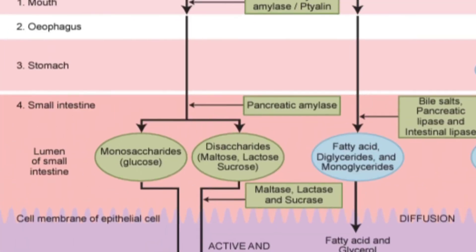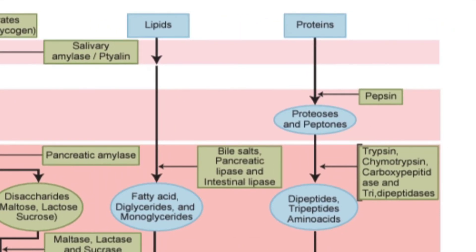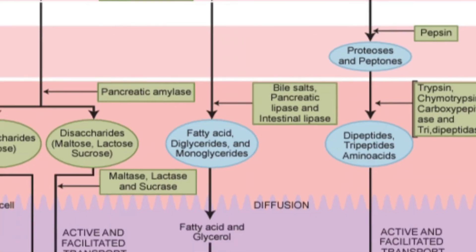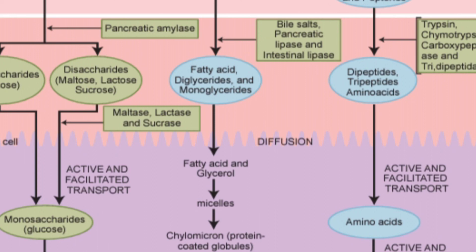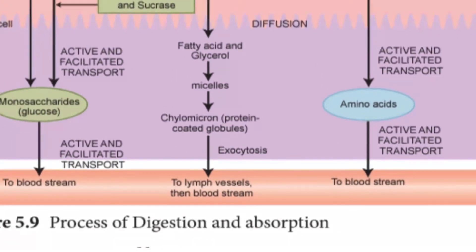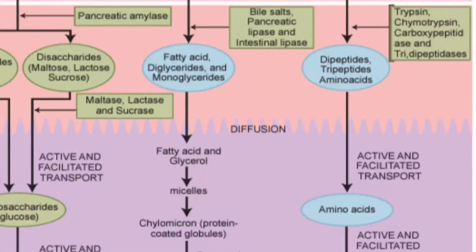For lipids: bile salts, pancreatic lipases, and intestinal lipases digest fats into fatty acids, diglycerides and monoglycerides. These form micelles, which are then converted into kilomicrons — protein-coated fat globules — and released via exocytosis into lymph vessels and blood vessels.